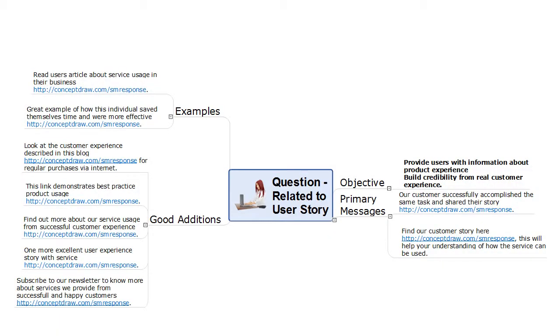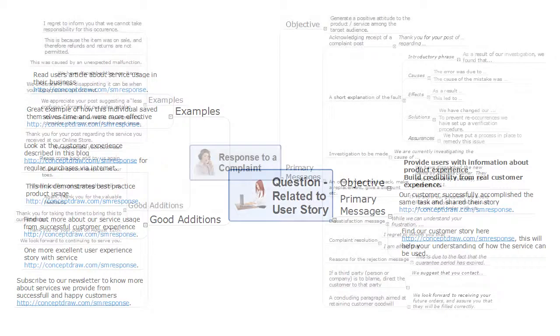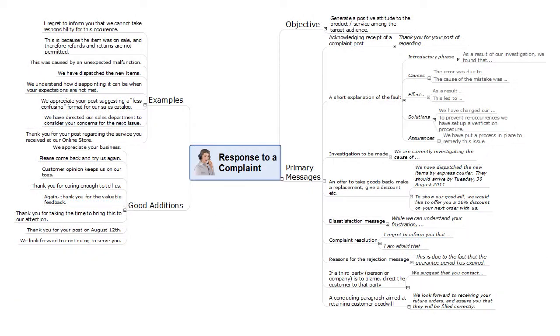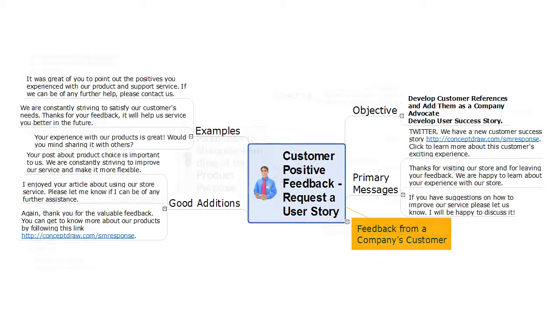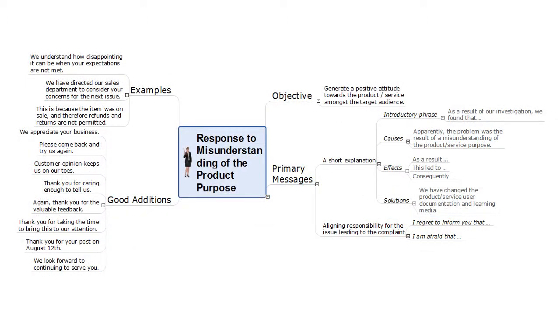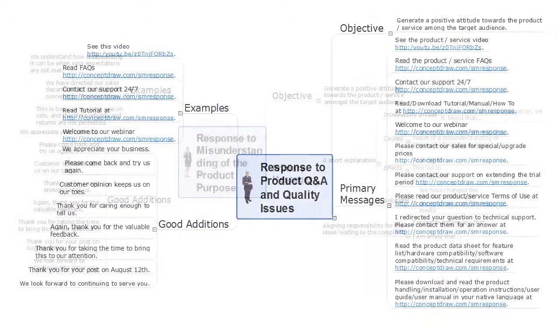The solution delivers action mind maps for questions related to user stories, such as responses to customer complaints or positive feedback, reactions to misunderstanding of a product's purpose or quality issues, and many other cases. You can also change these maps or add your own.